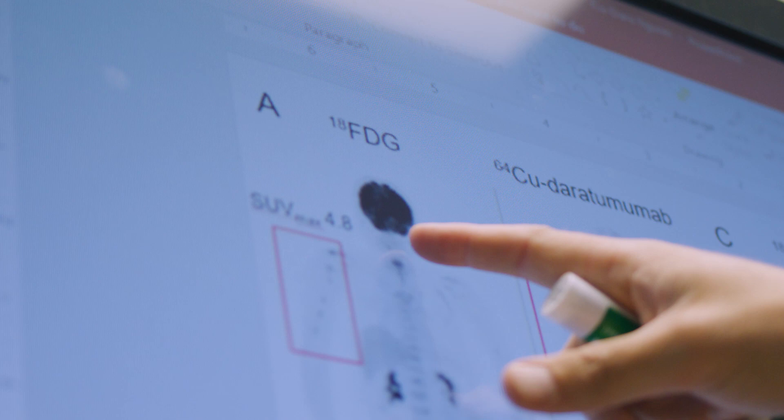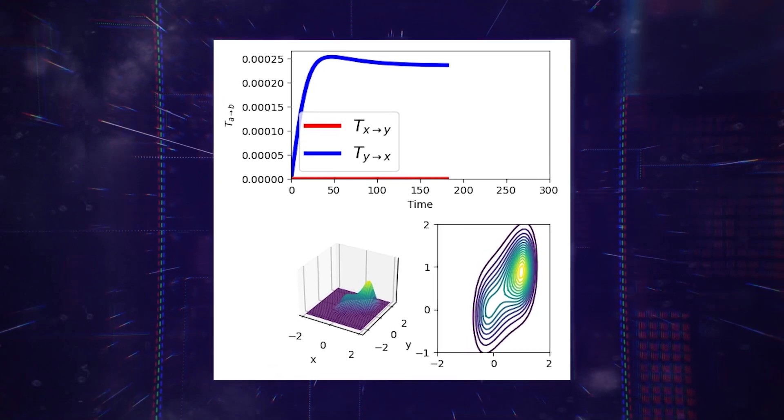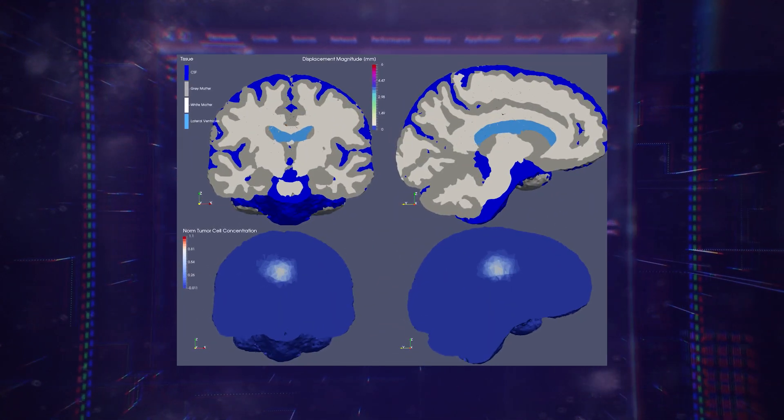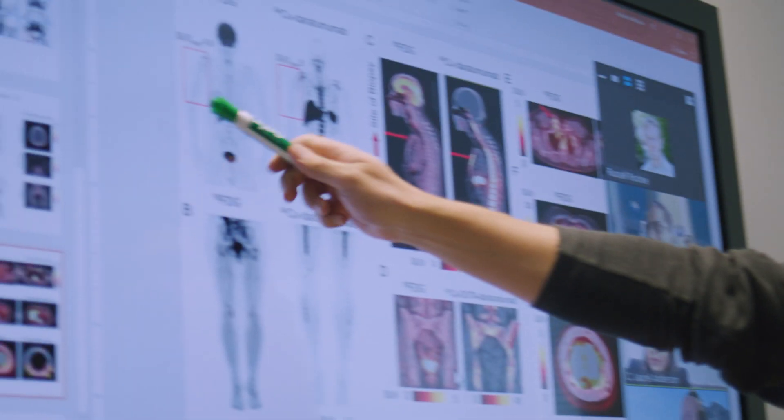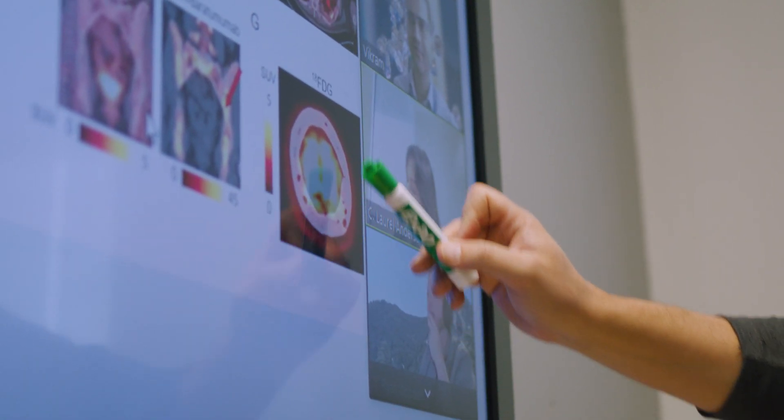Bioinformatics is basically taking all the information that you learn related to biology, like DNA sequencing, RNA sequencing, methylation. You take all the different biological-related data and then you analyze them using software programming.